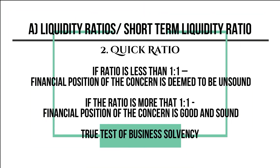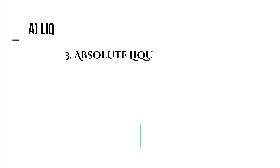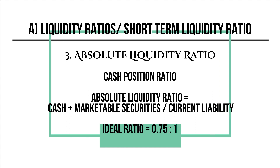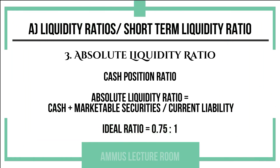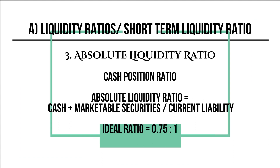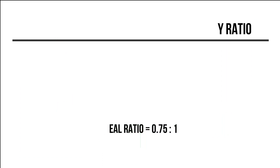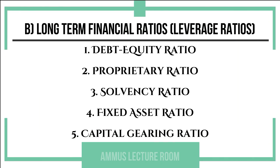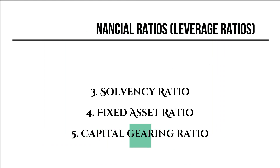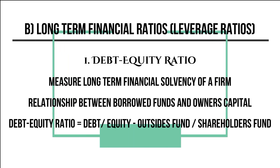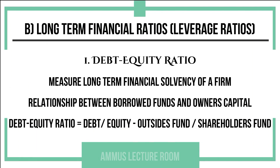The absolute liquidity ratio, also called the cash position ratio, is calculated as: cash plus marketable securities divided by current liabilities. The ideal absolute liquidity ratio is 0.75:1. Next are the long-term financial ratios, also called leverage ratios.